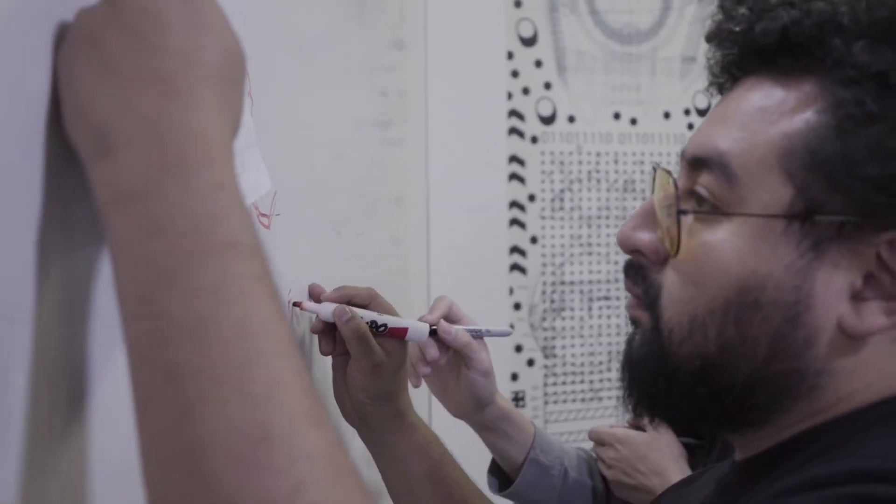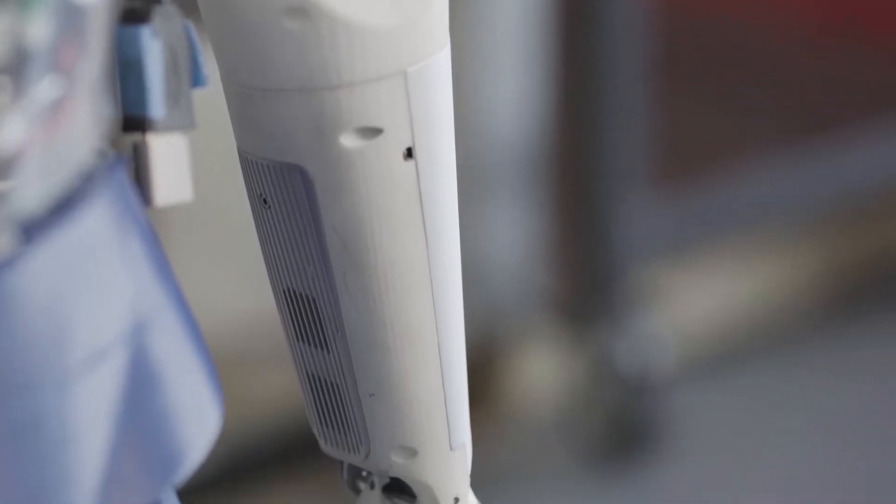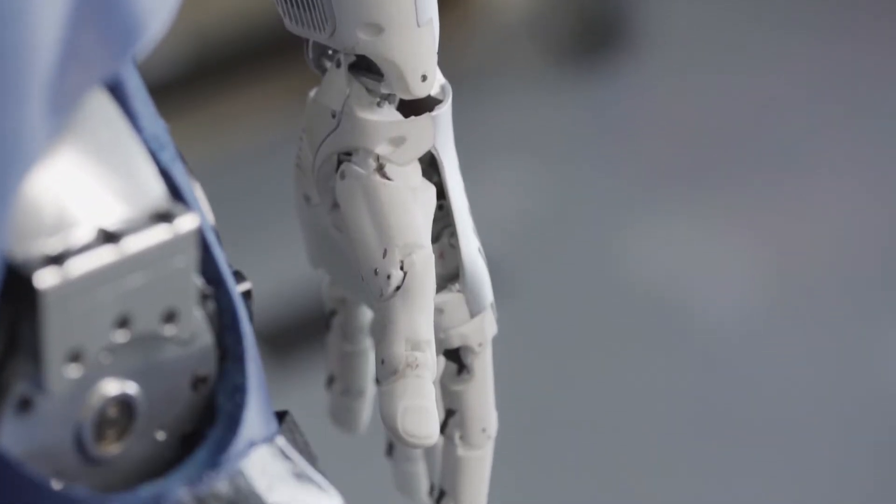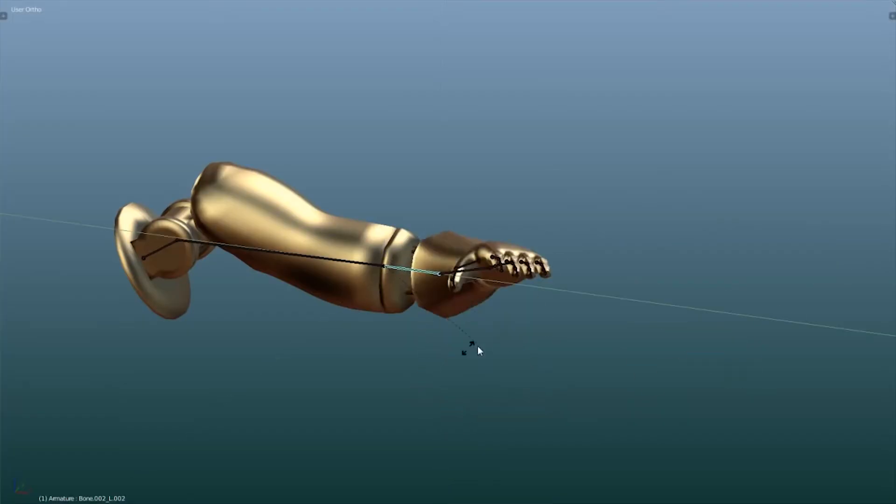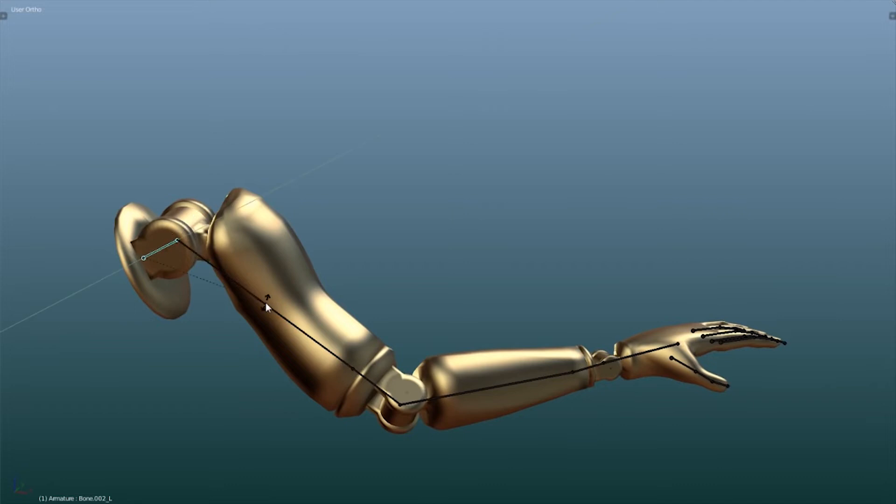However, this would not be possible without extensive planning and testing by the Hanson Robotics team. The first step is to design the outer shell of the arms to resemble the size and shape of human arms. Next, the team uses computer simulations of her joints to select the best servo motors to control her arms and hands.